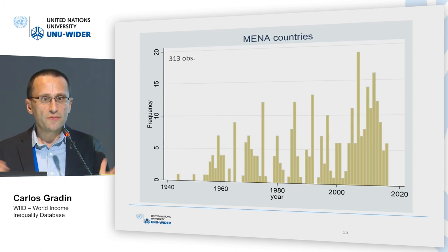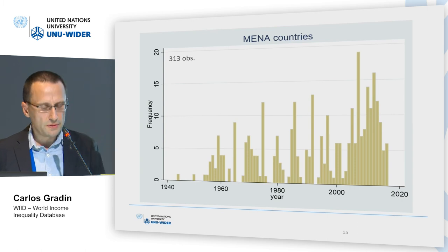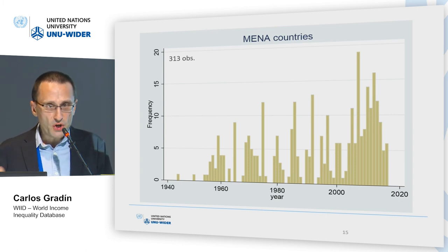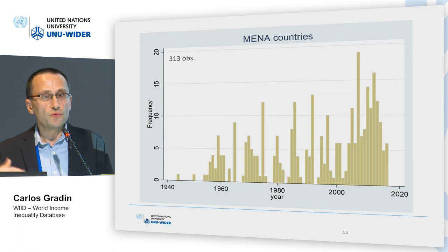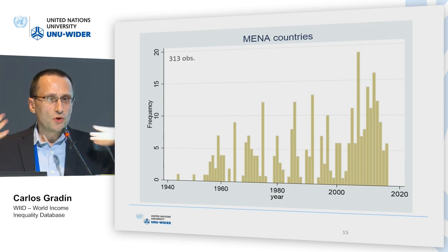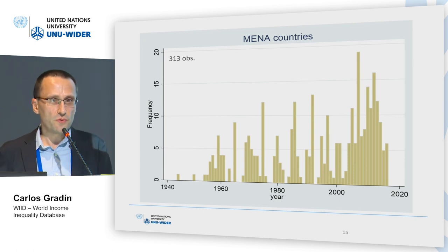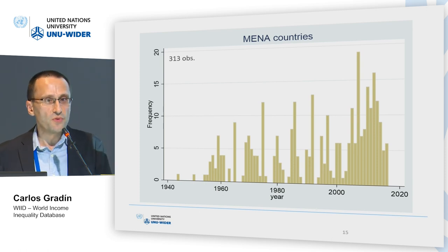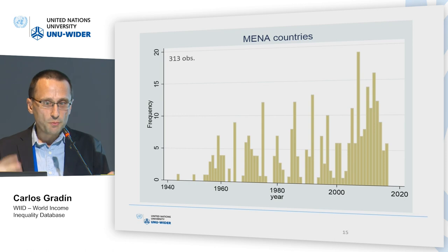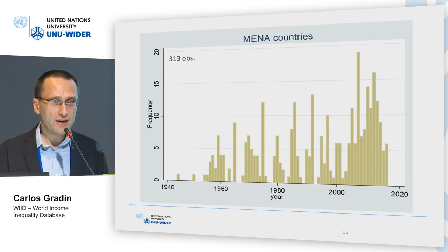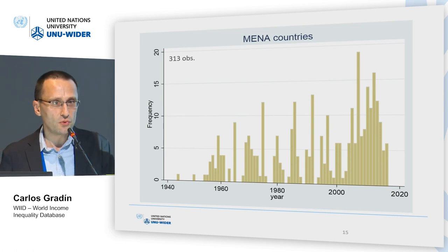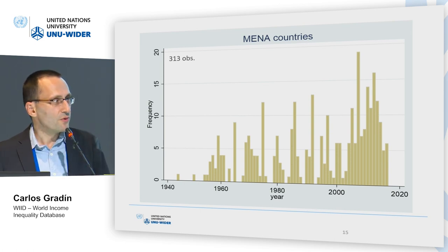There is a trade-off in inequality measures: there is a gap between the demand — which is increasing very fast — and the supply, which cannot increase as fast, because we cannot go back in time and conduct surveys in countries for which we have no information, or force countries to produce information if they don't. So the supply is quite limited, but we try to make the most of it so we can answer relevant questions about inequality, its trends, and the relationship between inequality and other relevant social phenomena. Thank you very much.